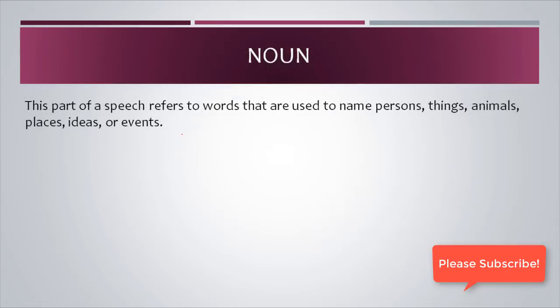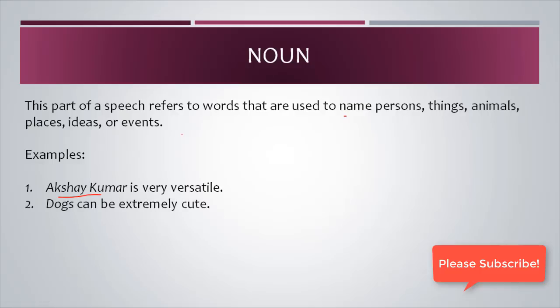Based on use and function, words are categorized into several types of parts of speech. The eight major parts of speech in English grammar are: noun, pronoun, verb, adverb, adjective, conjunction, preposition, and interjection. Nouns refer to words used to name a person, thing, animal, place, idea, or event. For example: 'Akshay Kumar is very versatile' — Akshay Kumar is a noun. 'Dogs can be extremely cute' — dogs is a noun. 'It's my birthday party' — birthday party represents an event, so it is also a noun.